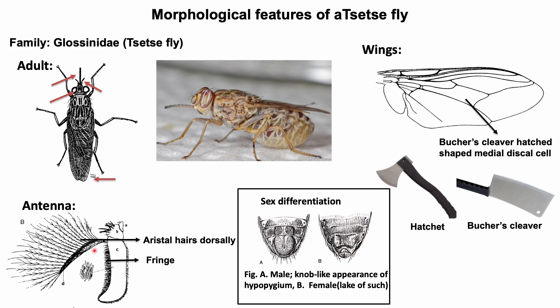The antenna is arista type — a three-segmented antenna. The elongated third segment bears arista on the dorsal side only, which is one of the unique features for these flies. The third antenna segment also bears a fringe, which is absent in any other arista-type flies.